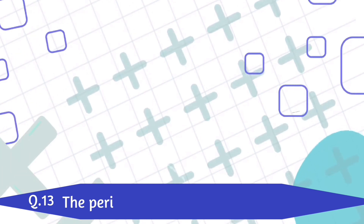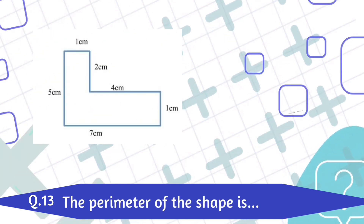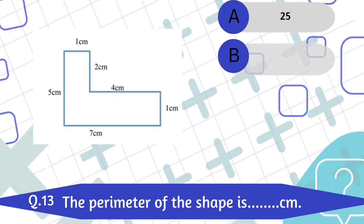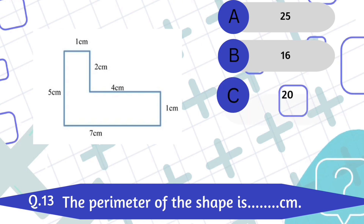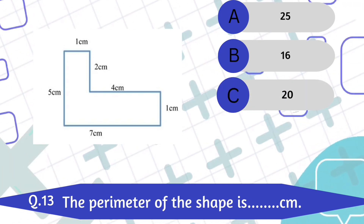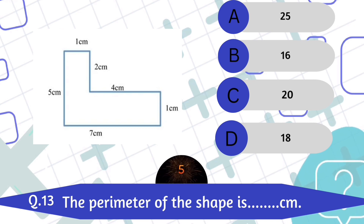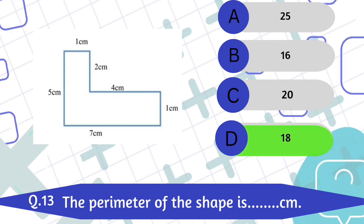Question number 13. The perimeter of the shape is dash cm. A. 25 centimeters. B. 16 centimeters. C. 20 centimeters. D. 8 centimeters. 18 centimeters is the correct answer.